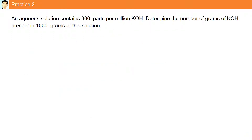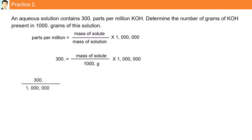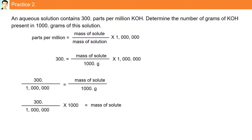Practice question two: an aqueous solution contains 300 parts per million KOH. Determine the number of grams of KOH present in 1,000 grams of this solution. Using the formula parts per million equals mass of solute divided by mass of solution multiplied by one million, we are given 300 ppm and 1,000 grams of solution. Plugging in: 300 equals mass of solute divided by 1,000 multiplied by one million. Rearranging, 300 divided by one million equals mass of solute over 1,000 grams, then multiplying both sides by 1,000 gives a mass of solute equal to 0.300 grams.